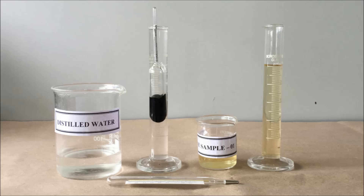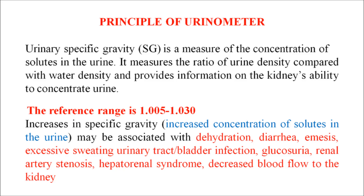The principle of the urinometer is very simple. The specific gravity of water is about 1.000, and to cross-check the specific gravity of urine we compare it with the help of water. In disease cases, the specific gravity of urine may be increased or decreased. The conditions are mentioned in the principle section.